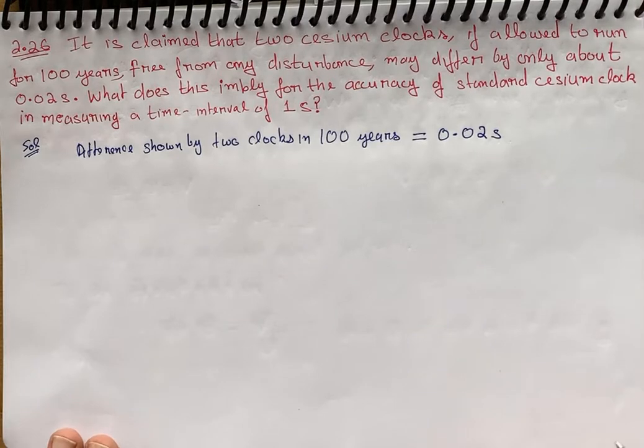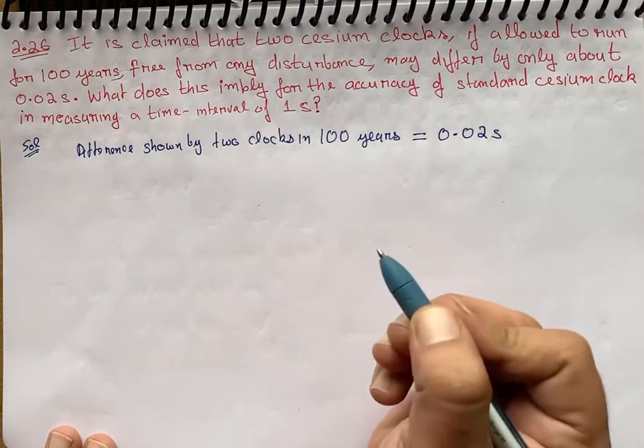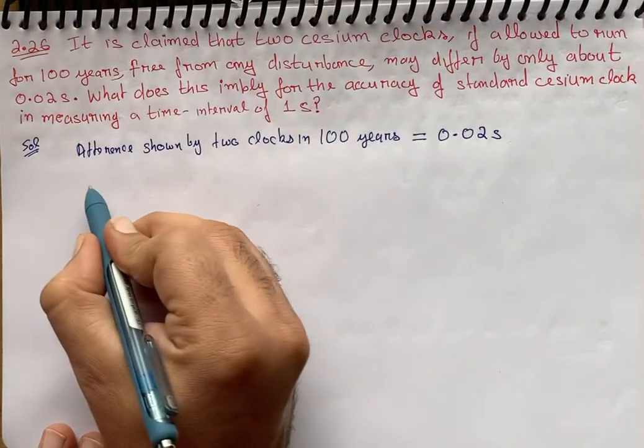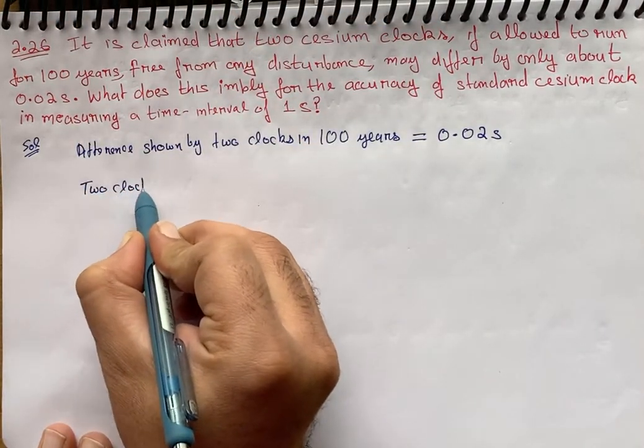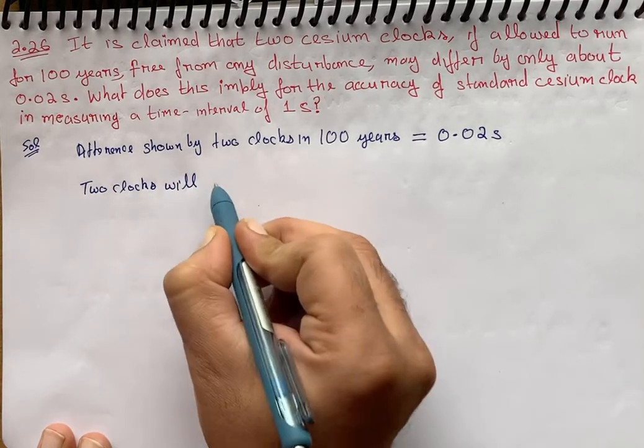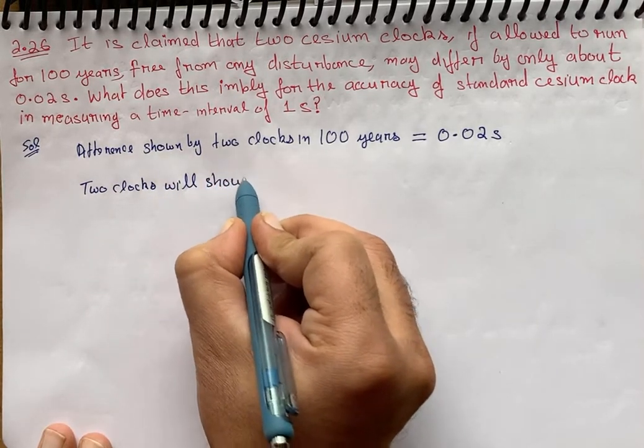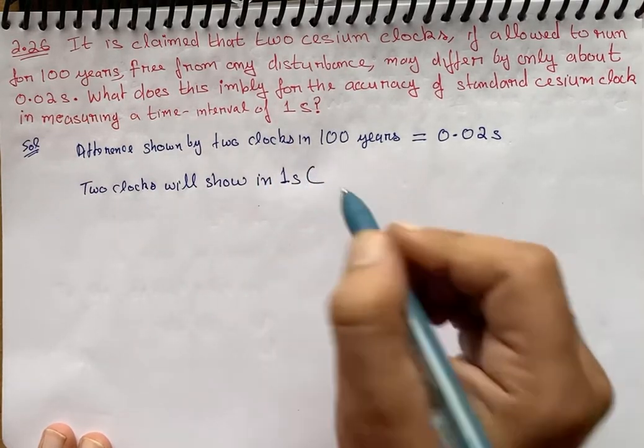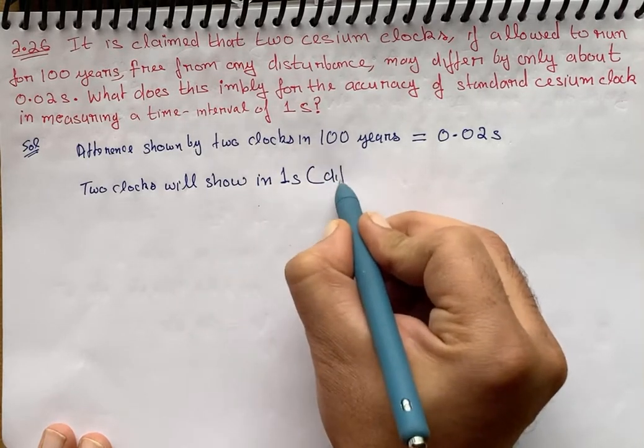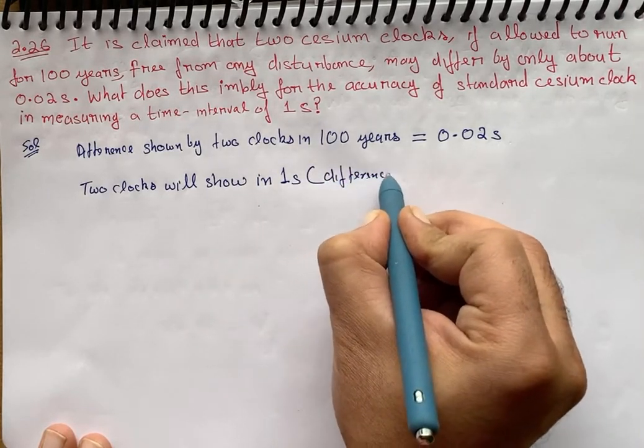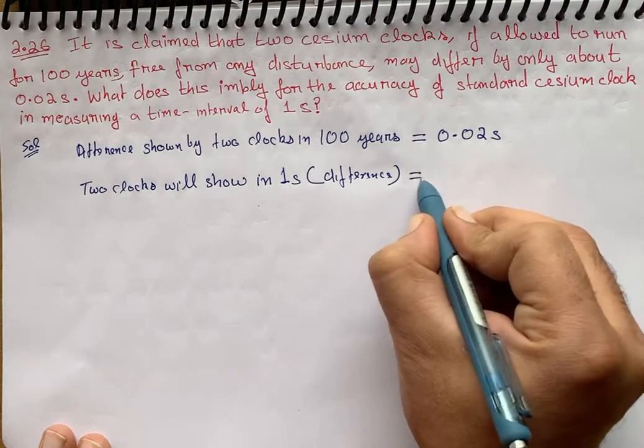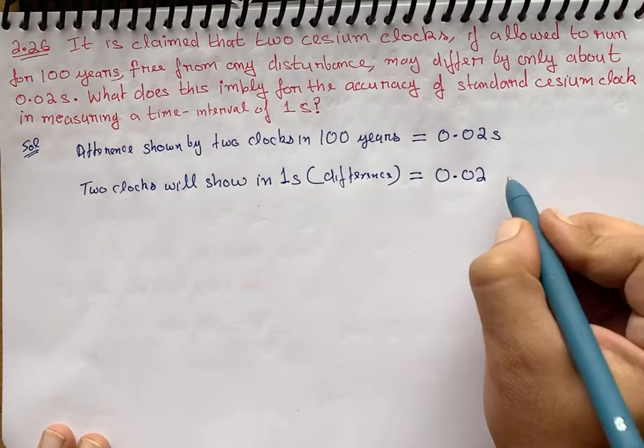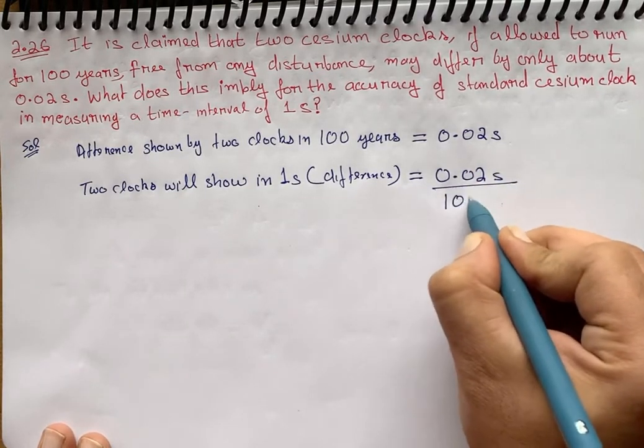So for measuring the time interval of one second, two clocks will show in one second a difference equal to 0.02 seconds divided by 100 years.